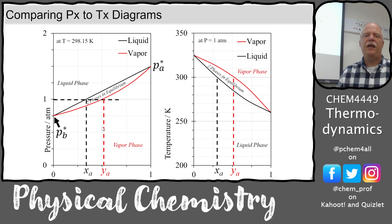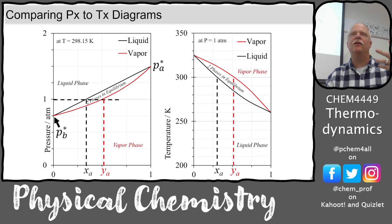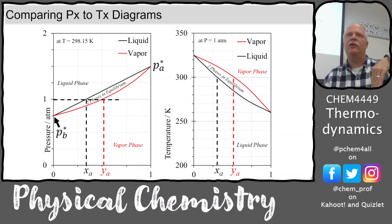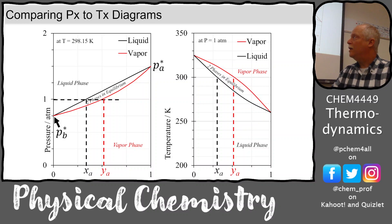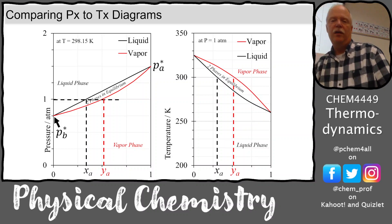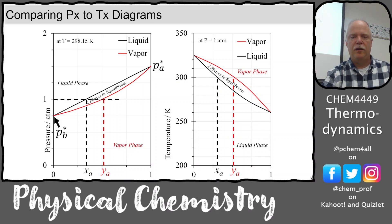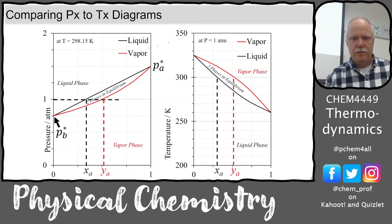So now we're going to take that PX phase diagram. It's kind of like we flipped the y-axis. We don't really flip it upside down, but it looks like we did because low pressure, low vapor pressure means a high boiling point. So that's on the left would be the low pressure, low vapor pressure for pure B, and over on the right would be the boiling point of pure B. So these things right here are the boiling points, TB and TA.